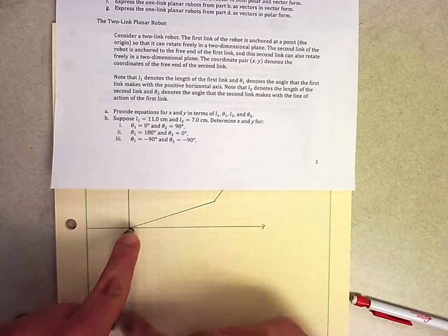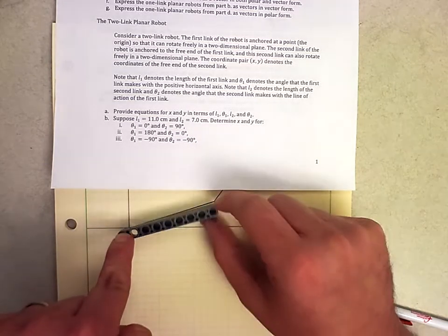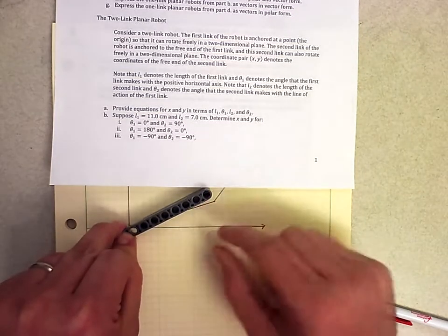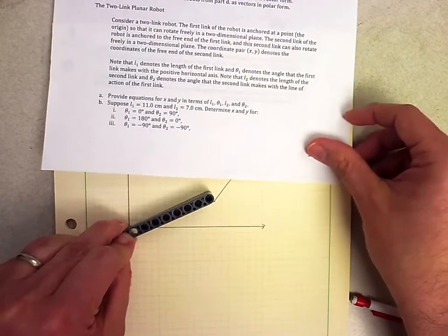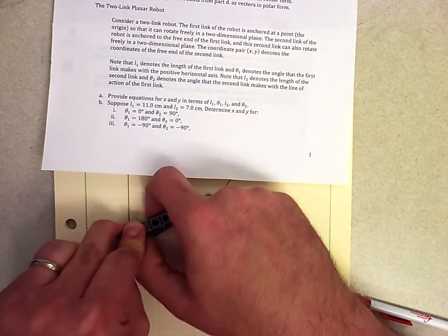So we anchor our point and it can rotate around wherever it wants to go. And then the second link of the robot is anchored to that free end and so it can rotate freely in a two-dimensional plane as well.